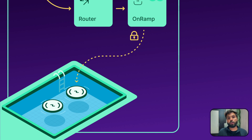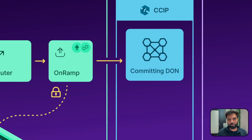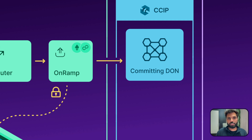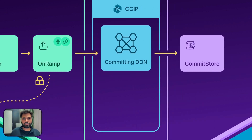The on-ramp smart contract also emits an event which the Committing DON (Decentralized Oracle Network) listens for. Once the event is emitted and the Committing DON receives the message, it will generate a Merkle root and send it to a commit store which is stored on the receiving chain.